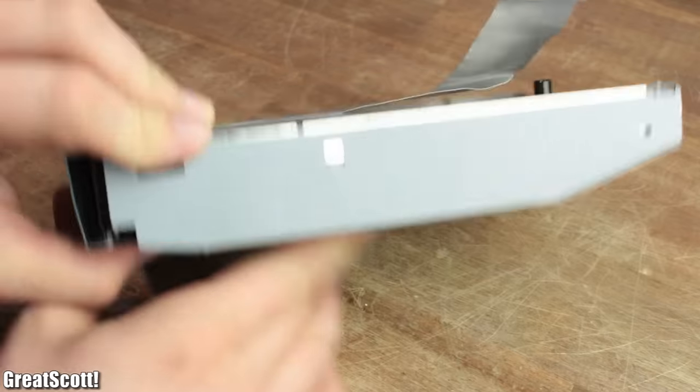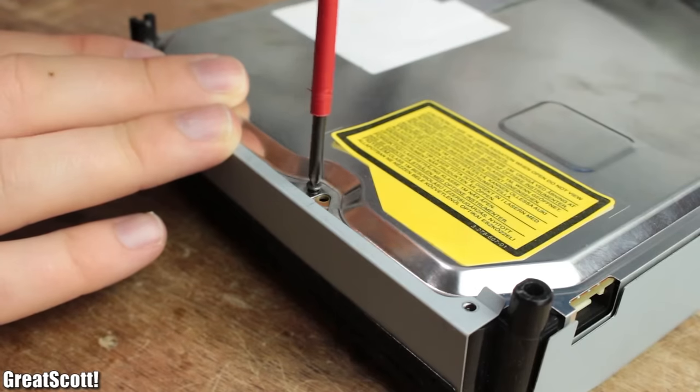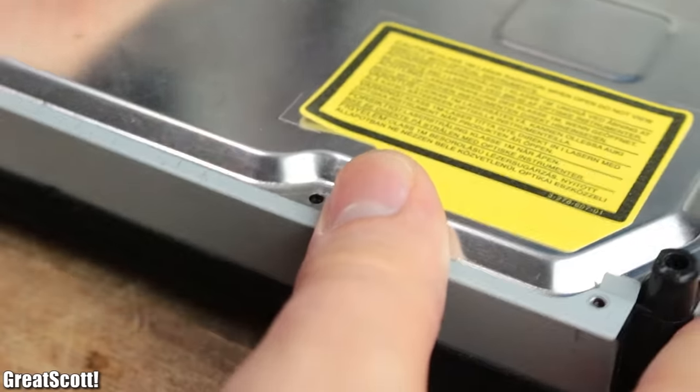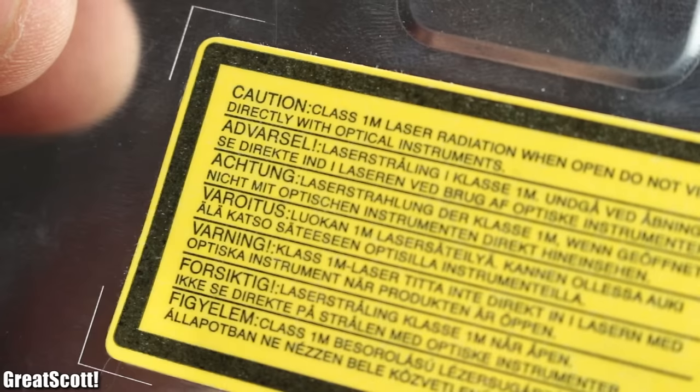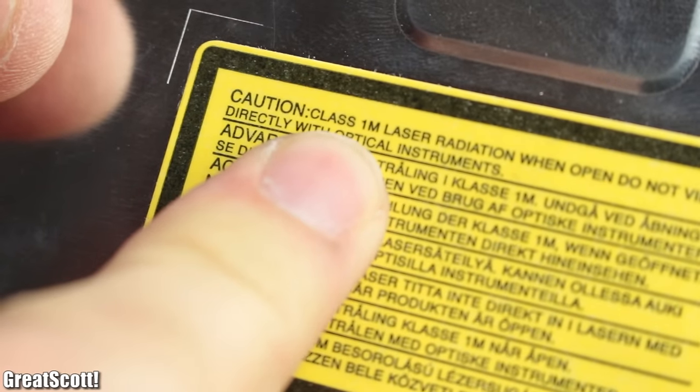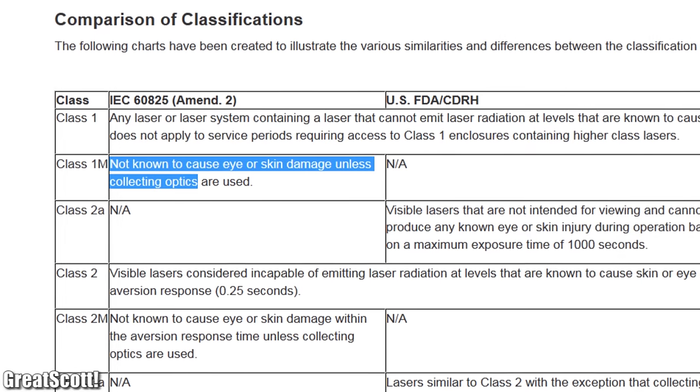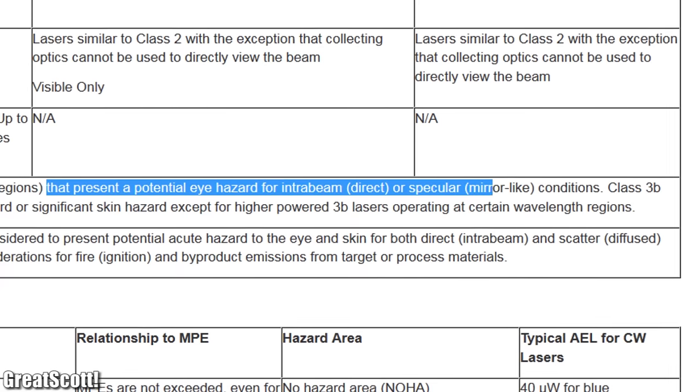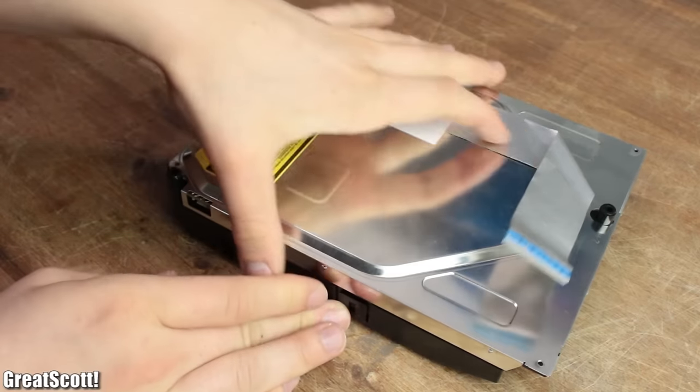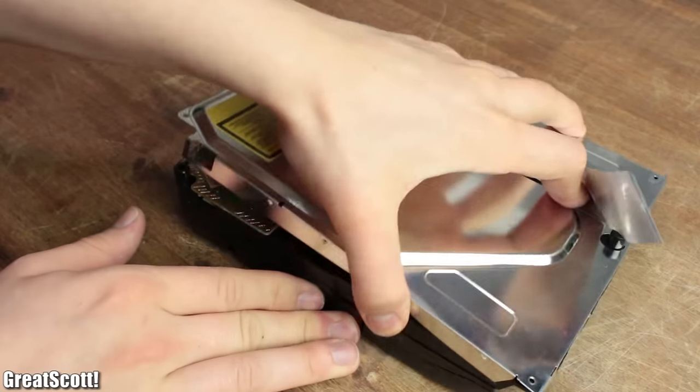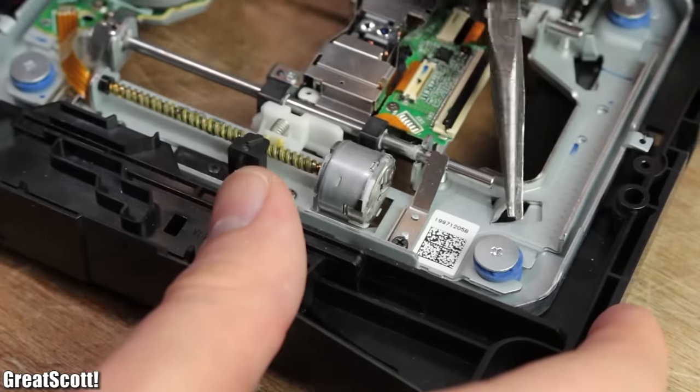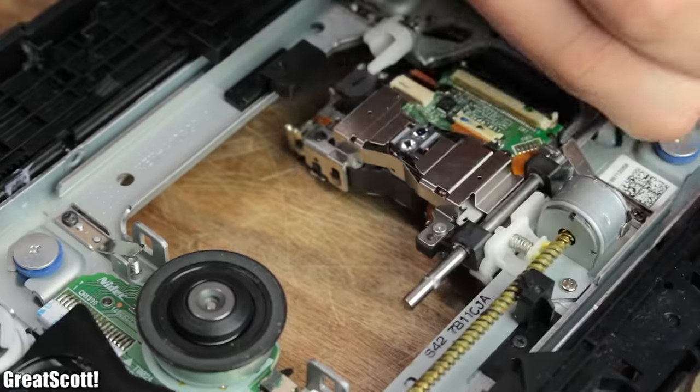Now let's get back to the Blu-ray drive. While I removed the first screws on the outside, I noticed a sticker which warns us about class 1M laser radiation. Apparently not as dangerous and powerful as the class 3B of a DVD burner, but I still continued by taking off the metal casing and bending two metal holders in order to extract the Blu-ray drive's head.